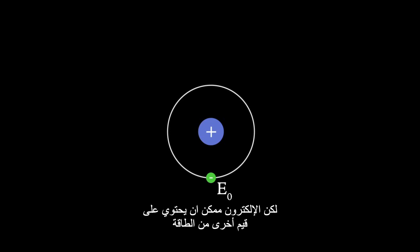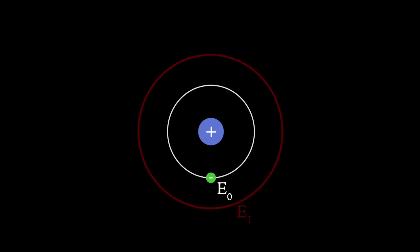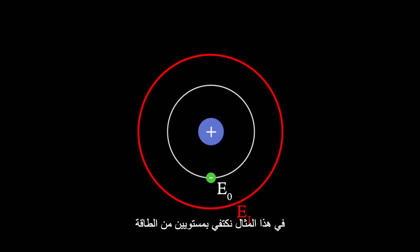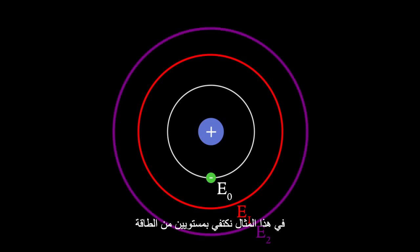However, an electron may have other discrete values of energy. For this example, two energy levels will suffice: E1 and E2.